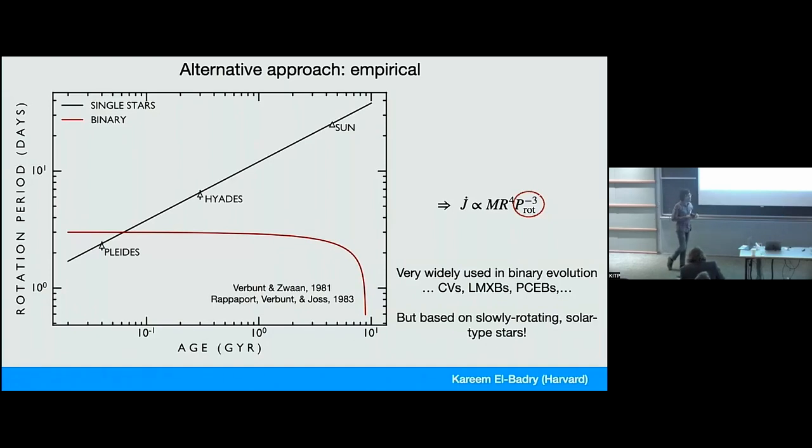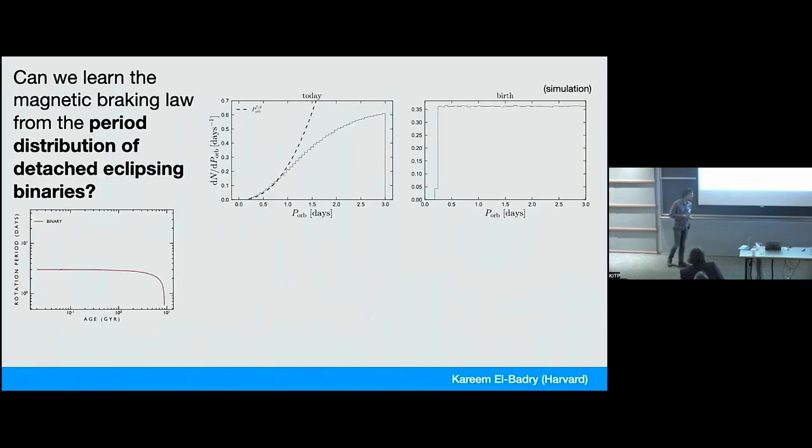But it's important to remember, this is based on slowly rotating solar type stars. They're rotating much slower than the stars in CVs or LMXBs and typically at higher masses. And so it's not obvious that it'll still work in closer binaries. And so what I've been looking at is, can we test this relation using observations of main sequence binaries?